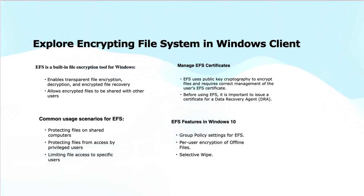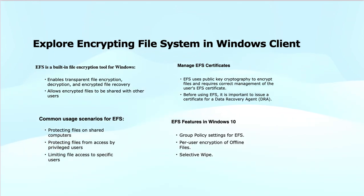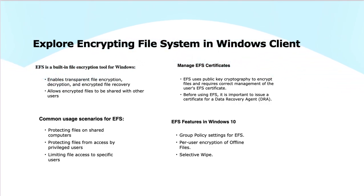EFS leverages both public and private keys from PKI. Files are encrypted using a File Encryption Key (FEK), which is a symmetric key — the same key is used to encrypt and decrypt the data because it is faster. This FEK is then encrypted by the public key of the person or identity with whom we want to share the file, so that target identity can use its private key to access the file confidentially. EFS features in Windows 10 include group policy settings, per-user encryption for offline files, and selective wipe.